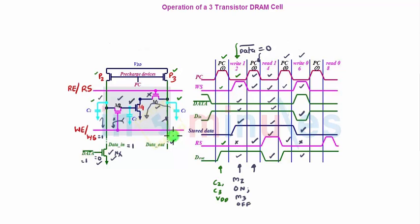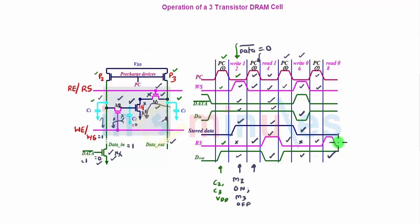For read 0: make PC equal to 1 and set write and read signals both to 0. Read 0 means read signal goes high so M3 is on and M2 is off. C1 was discharged to 0, so M1 is also off. C3 was pre-charged to VDD but has no path to discharge because M1 is off, so D out holds at logic 1. The column circuitry interprets D out staying at 1 as a 0 stored on C1 — we have read the 0. This completes the explanation of the 3-transistor DRAM. Thank you.